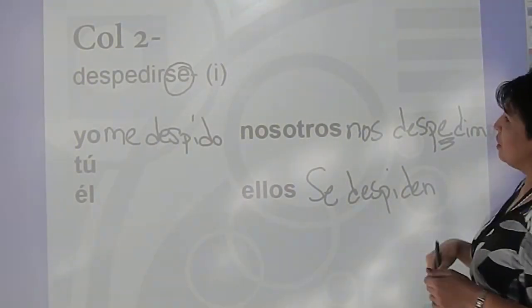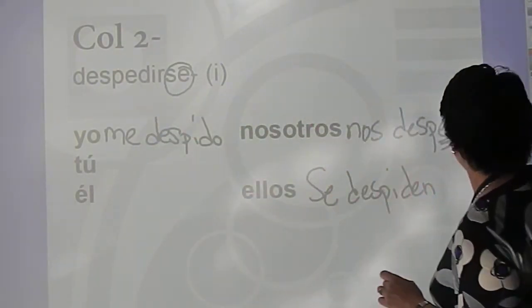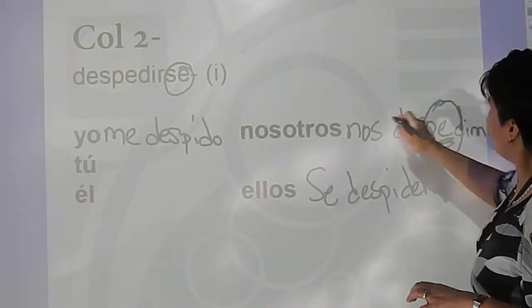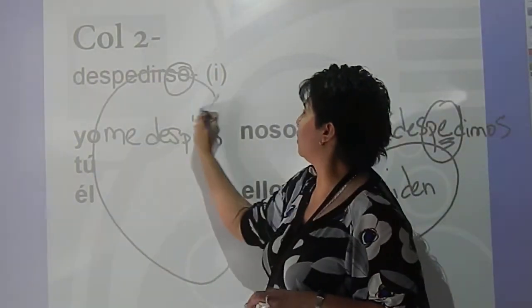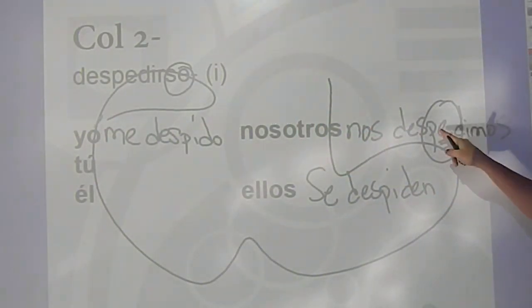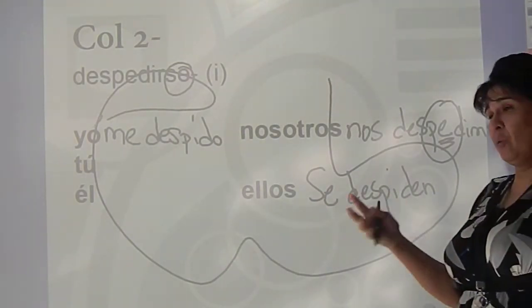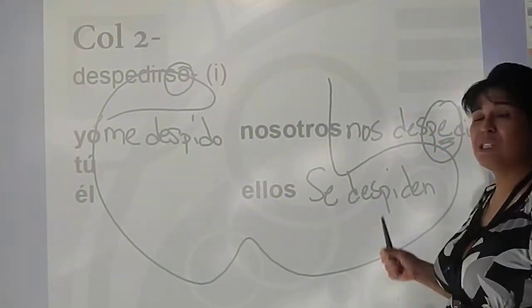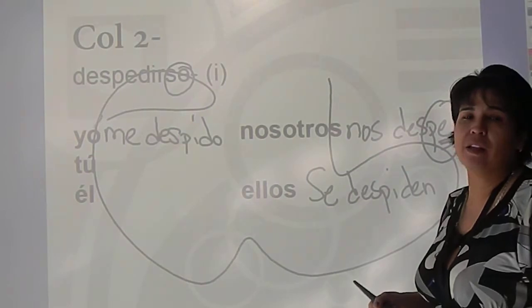Nosotros nos despedimos. Why? Because it's an IR verb, so it's imos. And it's not going to stem change because it's not in the boot. So be careful with that. We say goodbye. We said goodnight around 10:30 at night. Nos despedimos a las diez y media de la noche.